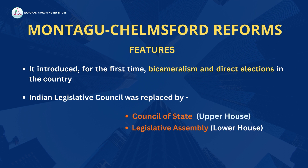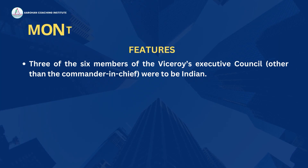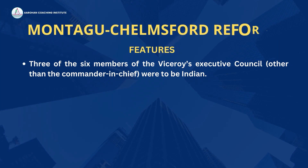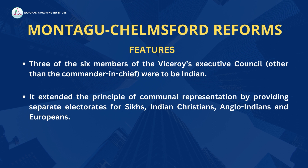The majority of members of both houses were chosen by direct election. It required that three of the six members of the Viceroy's Executive Council, other than the Commander-in-Chief, were to be Indian. It extended the principle of communal representation by providing separate electorates for Sikhs, Indian Christians, Anglo-Indians, and Europeans.